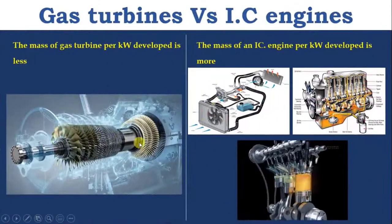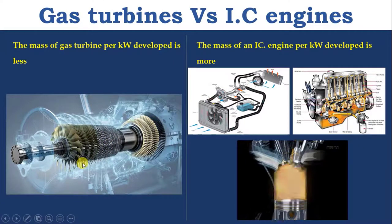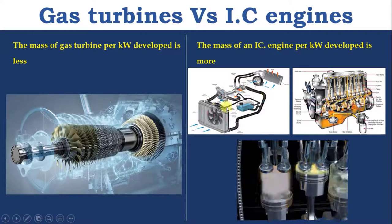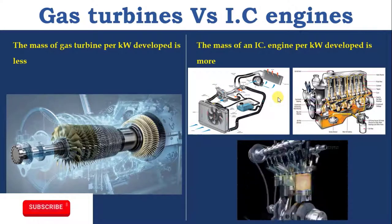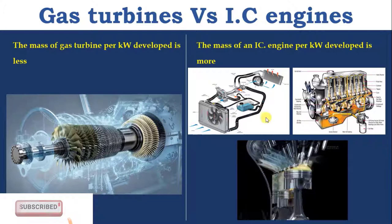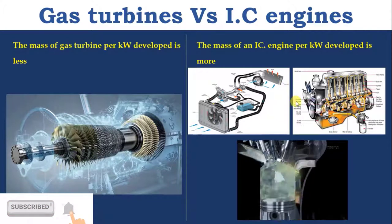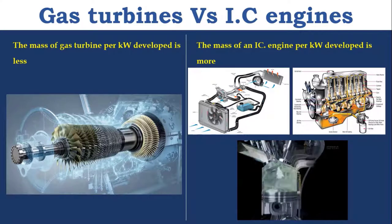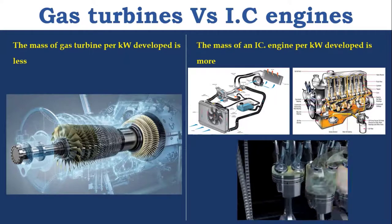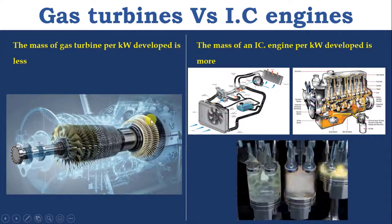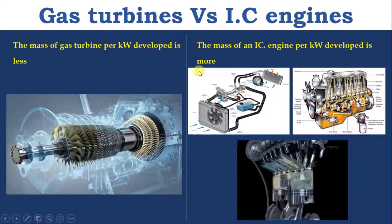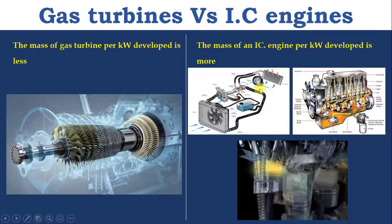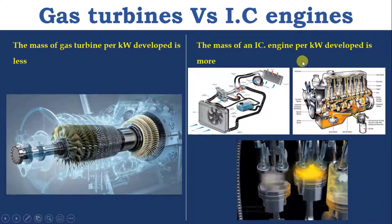Mass of gas turbine per kilowatt developed is less, whereas the mass of IC engine per kilowatt developed is more. IC engines operate at high pressure, so they are made of heavy metal. Also, their complicated lubrication and cooling systems make IC engines heavier than gas turbine engines. However, the area required for installation of a gas turbine engine is more compared to the IC engine per kilowatt developed.